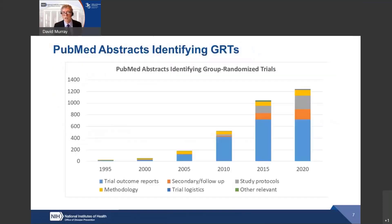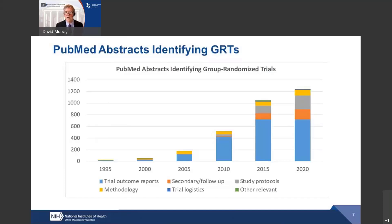Group randomized trials are becoming increasingly common in the biomedical literature. We didn't have many of these in the literature in the early 90s, but they've grown steadily, with the highest number appearing in 2020, and that number is going to continue to grow. These trials are simply very appropriate for certain kinds of interventions, particularly group-based interventions.